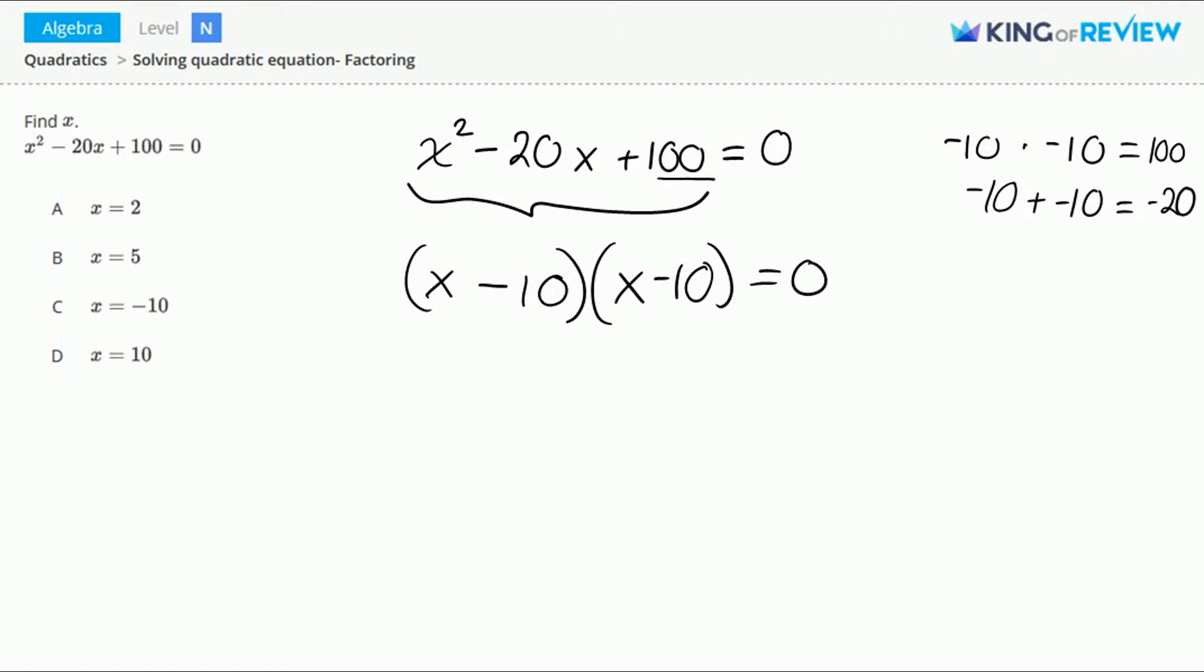And negative 10 plus negative 10 gives us the negative 20. So now we have x minus 10 times x minus 10 equals 0.